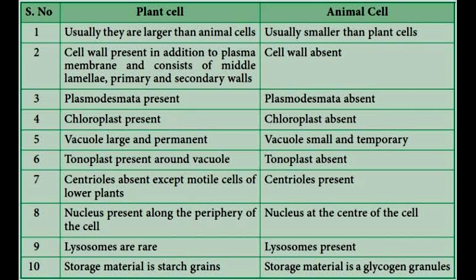In plant cell, storage material is starch grains. In animal cell, storage material is glycogen.